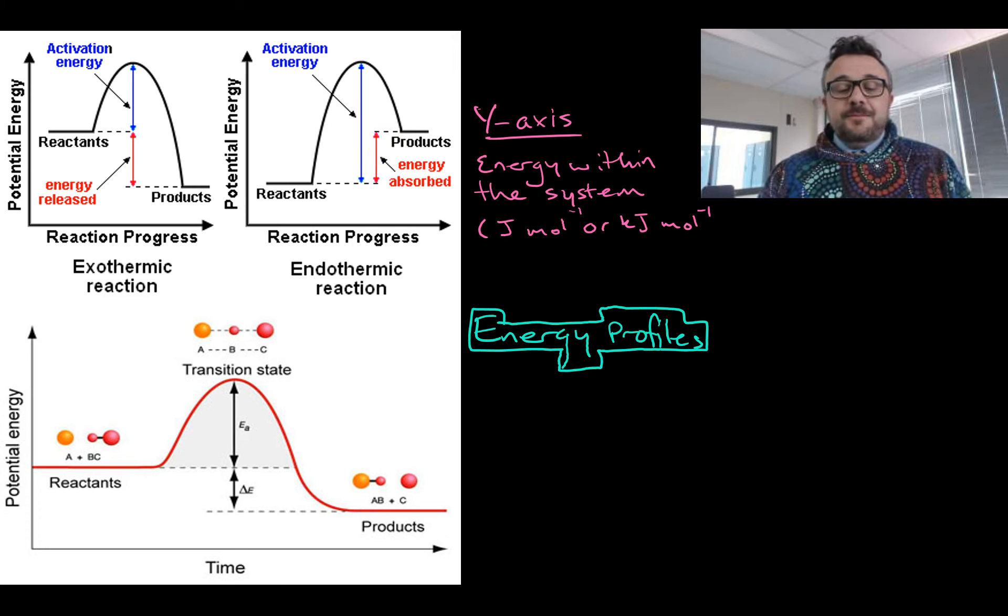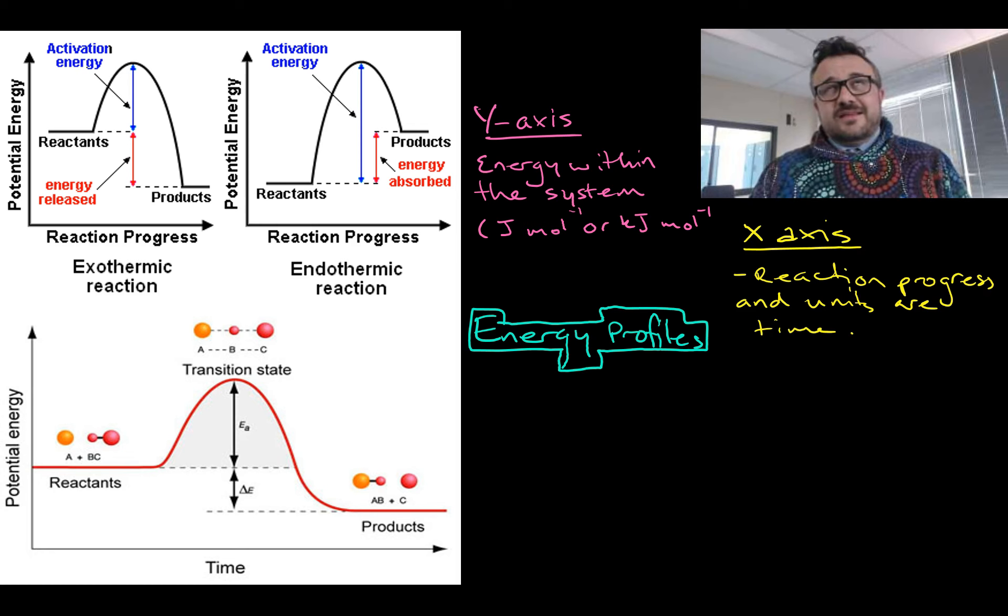So on the y-axis of our graph we see the energy within the system in joules per mole or kilojoules per mole. On the x-axis we see the reaction progress or the reaction coordinate, and these units are a function of time.